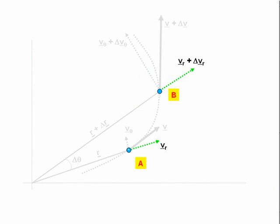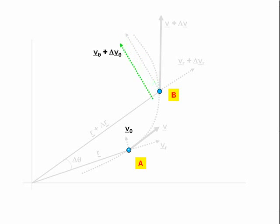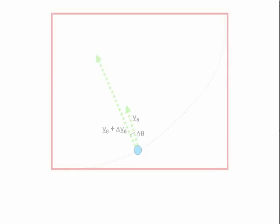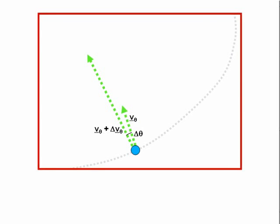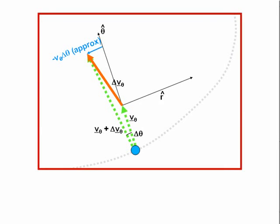Now let us consider the tangential component of velocity. This changes from v-theta at a to v-theta plus delta-v-theta at b. Sliding the vector at b down and magnifying the diagram as before, we see that the change in v-theta — delta-v-theta, the red vector — has a component in the negative r direction, which is equal to v-theta delta-theta in magnitude.